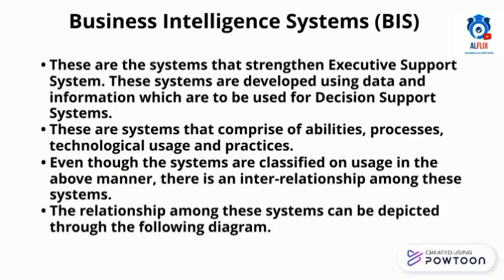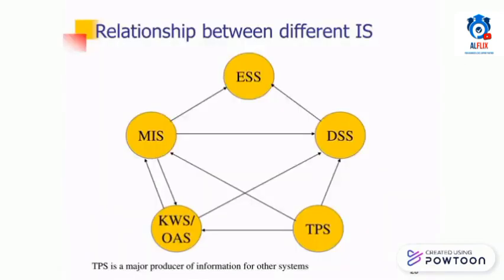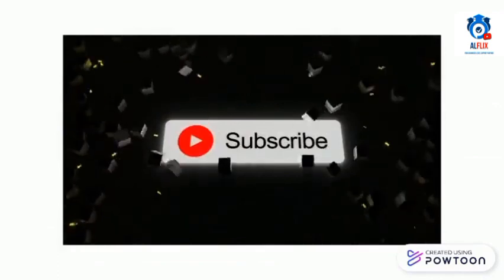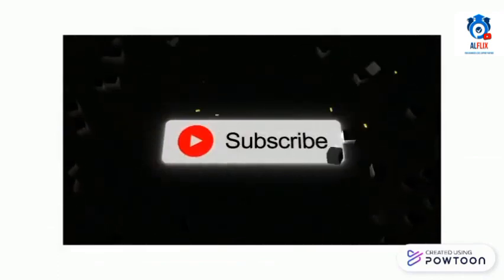Even though the systems are classified by usage in the above manner, there is an interrelationship among them, which can be depicted through a diagram. The arrows show the direction of flow of data. Accordingly, the transaction processing systems of an organization provide data for other information systems like DSS and MIS. ESS receives data from MIS and DSS.